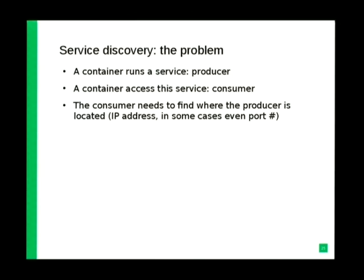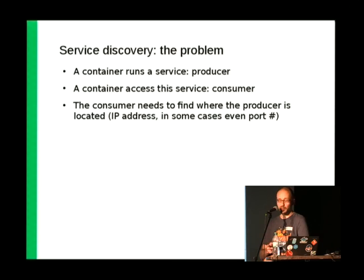Let me introduce the service discovery problem. There are two actors: a producer — a container with a service running inside, like the database — and a consumer, which is something using that service, like the web application. When you start the web application container, you have to find where the database is running. Depending on your network setup, you might need the IP address and even the port number. With Kubernetes you don't need the port, but with other solutions you do.